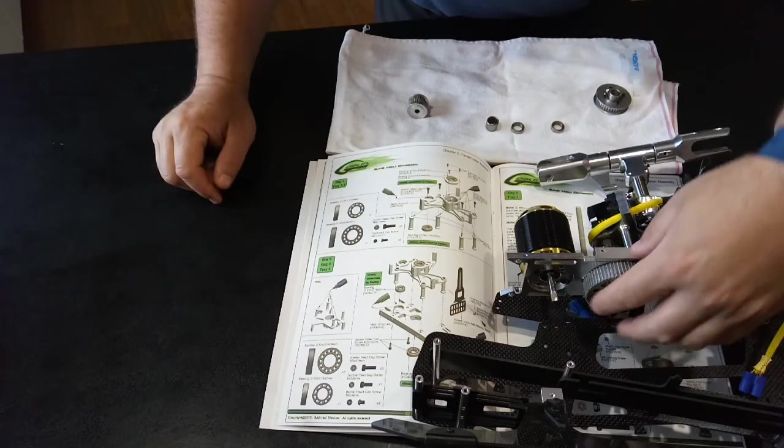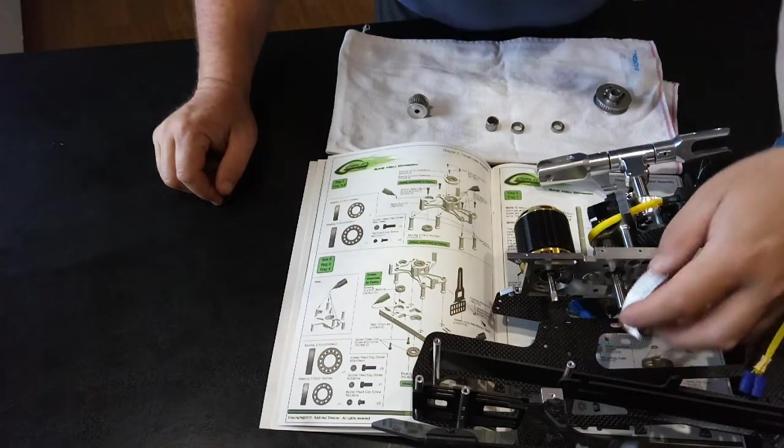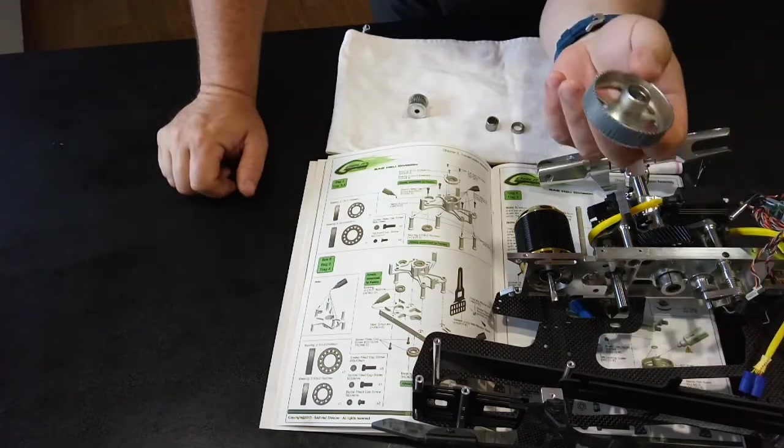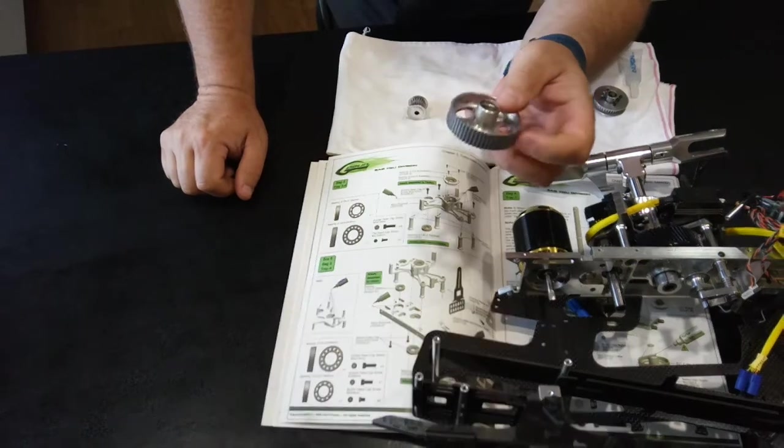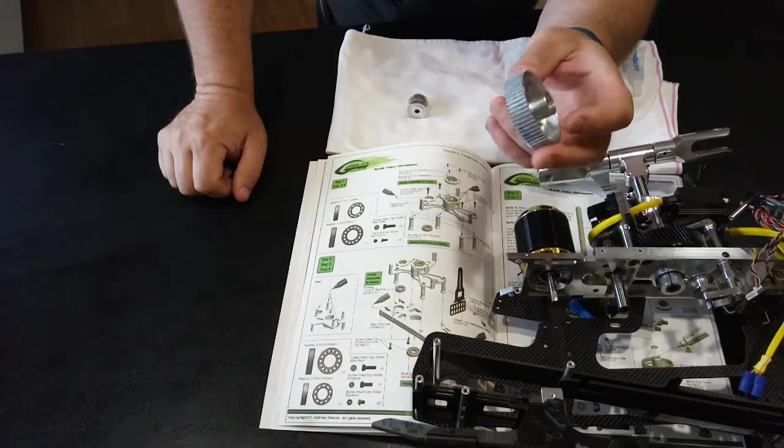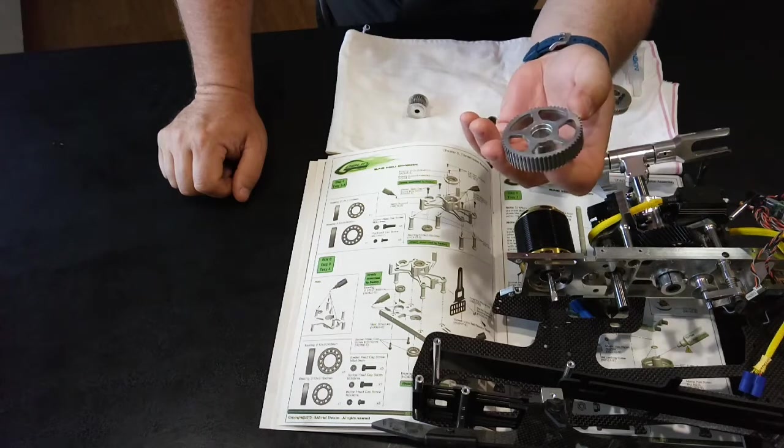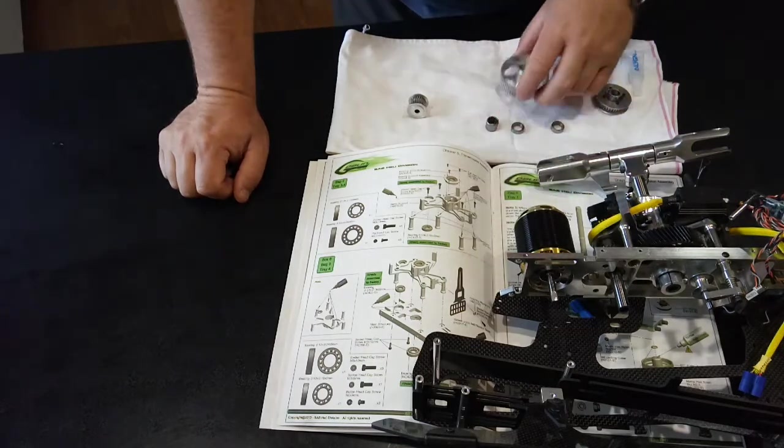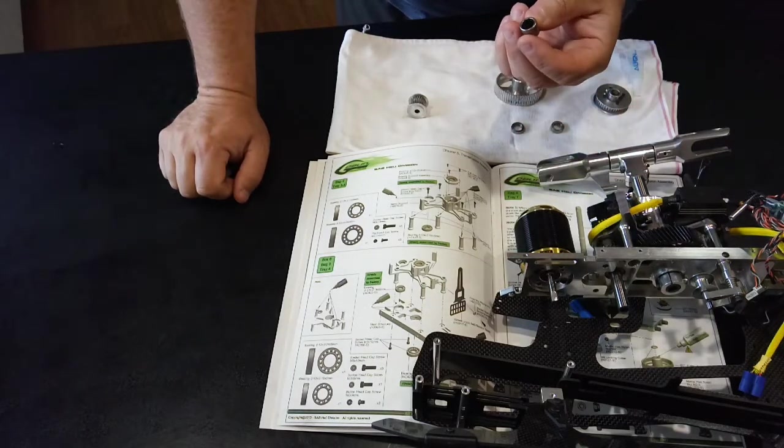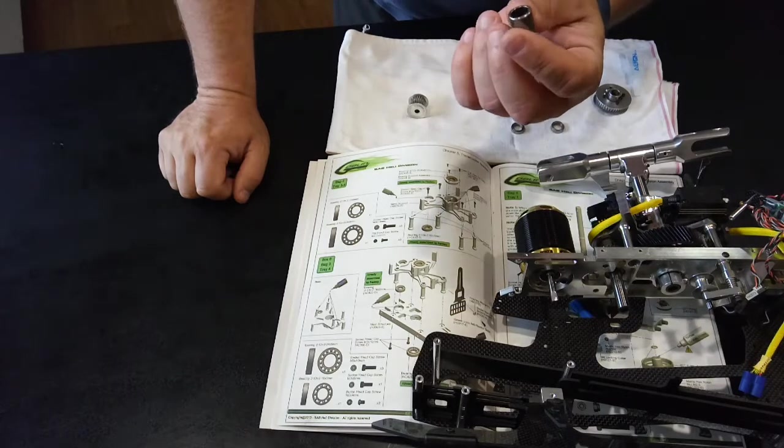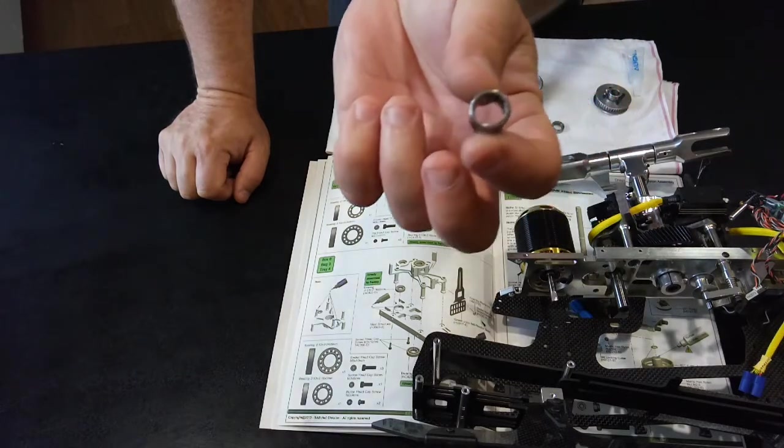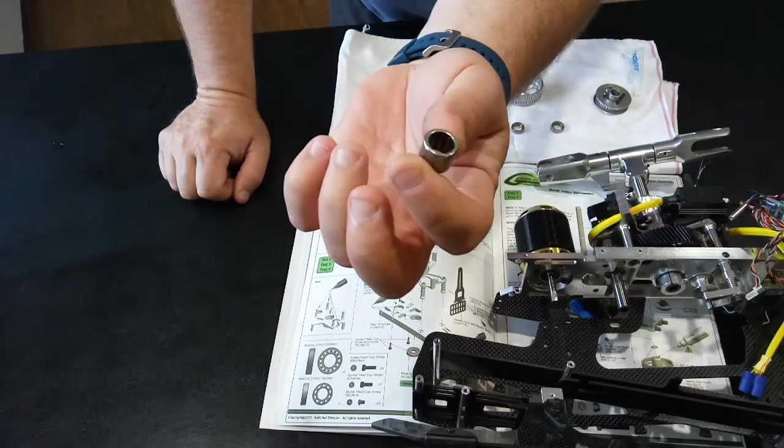You can buy the whole assembly, and it costs about, New Zealand dollars, about $35, $40. Or, you can buy the thrust, the one-way bearing itself, which has an arrow on it to show the direction of it.